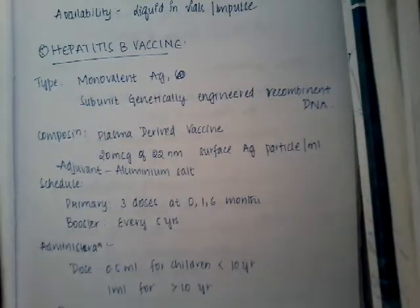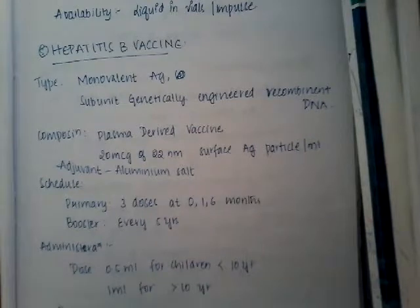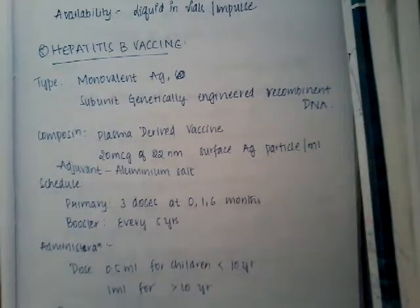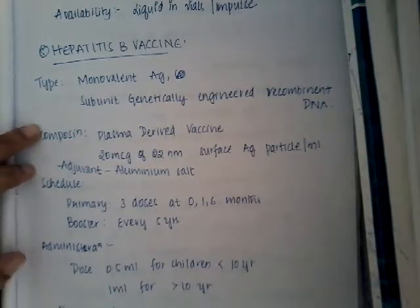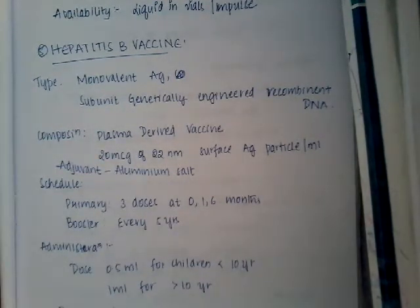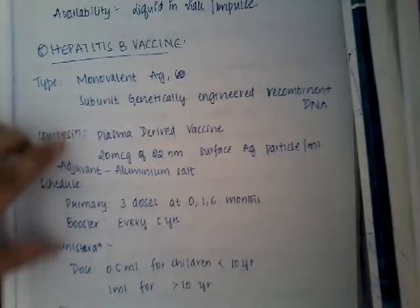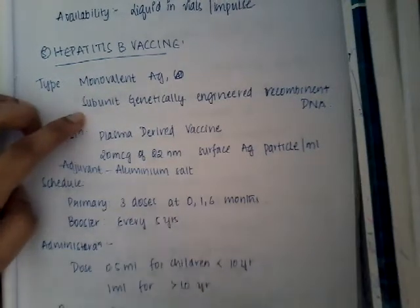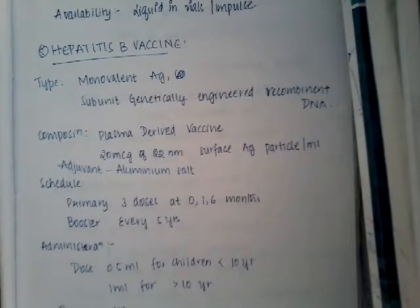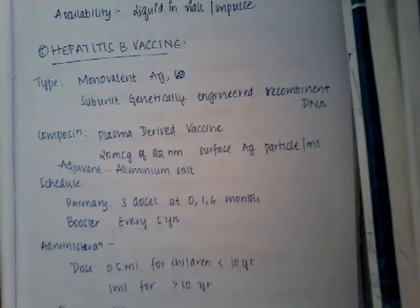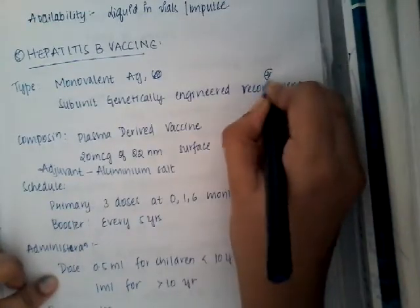Hello friends, welcome to a new lecture on Hepatitis B vaccine. This is a monovalent antigen vaccine and also a subunit genetically engineered recombinant DNA vaccine. Hepatitis B vaccine is a recombinant DNA vaccine — don't forget that.